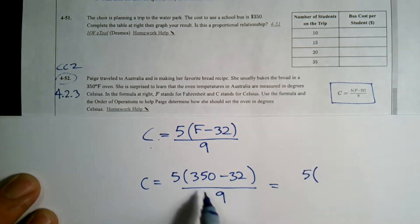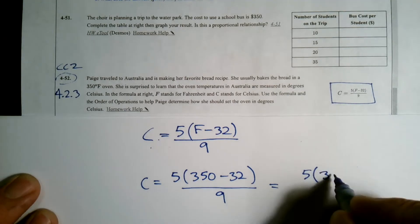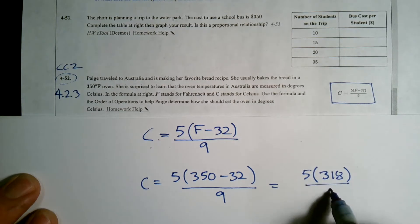So it's 5 times what is 350 minus 32. Let's see, that would be 318. And then all of that now divided by 9.